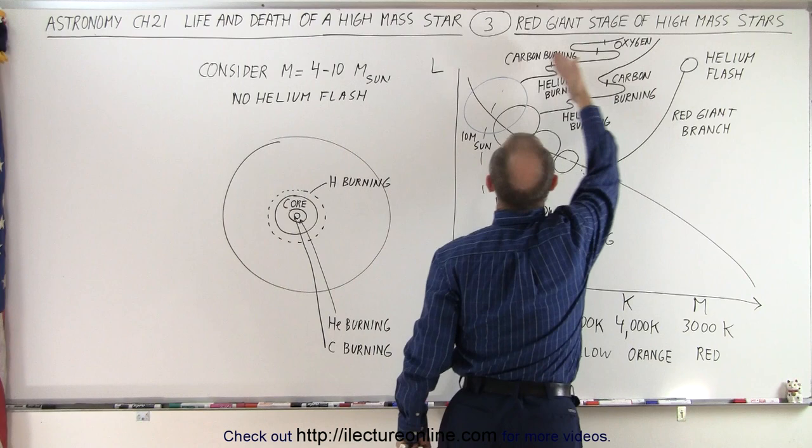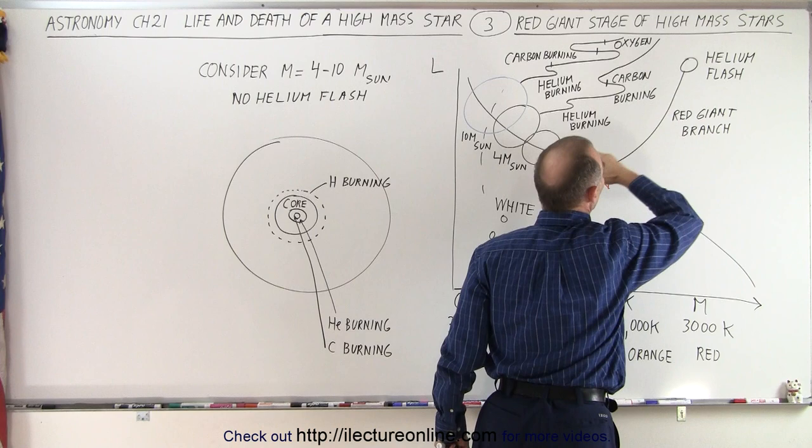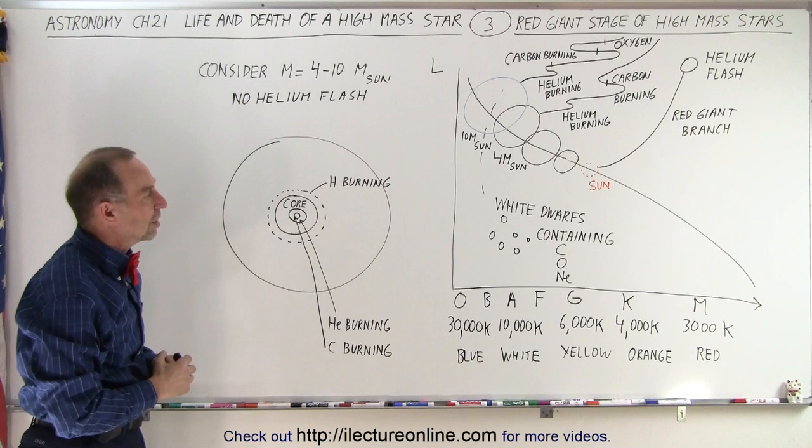Notice that those stars become much more luminous, because vertical direction is luminosity, than the typical size red giant stars. So they go much higher up, at much larger sizes, and much greater luminosities.